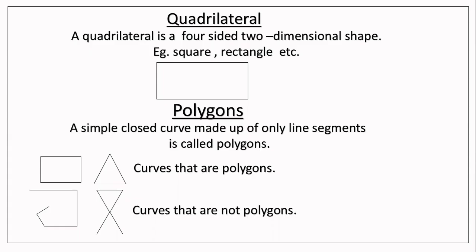What is a quadrilateral? A quadrilateral is a four-sided, two-dimensional shape. For example, a square, a rectangle — this is a rectangle with four sides. Quad means four, lateral means sides, so four-sided two-dimensional shapes are called quadrilaterals.